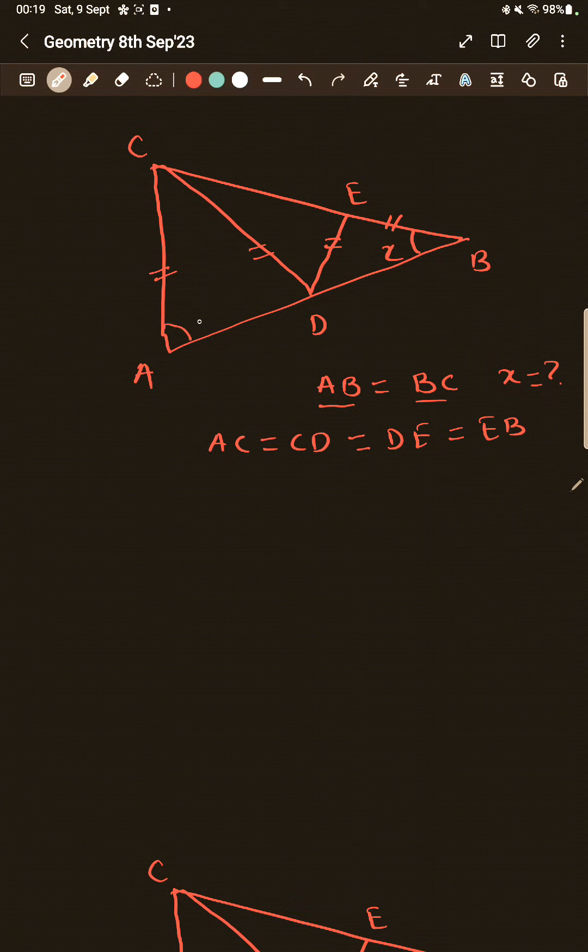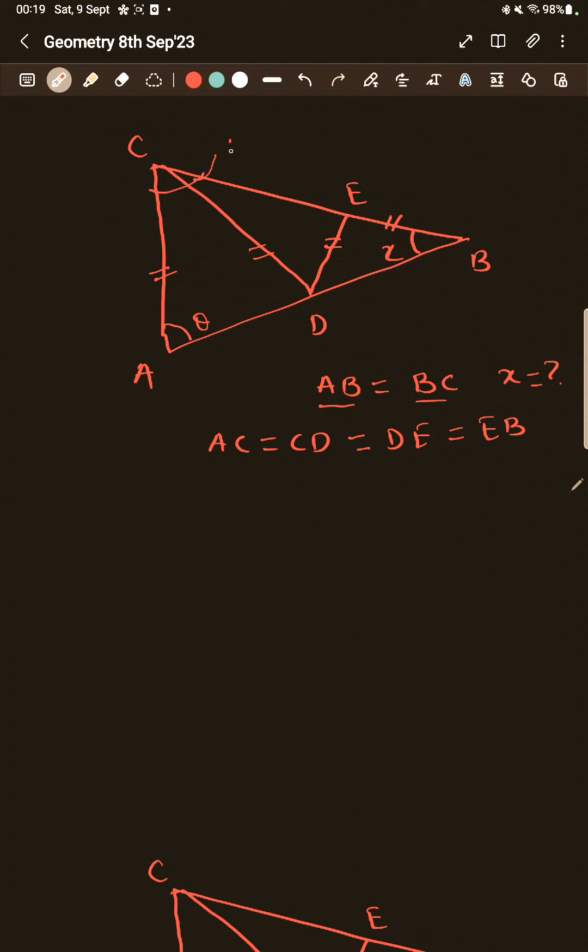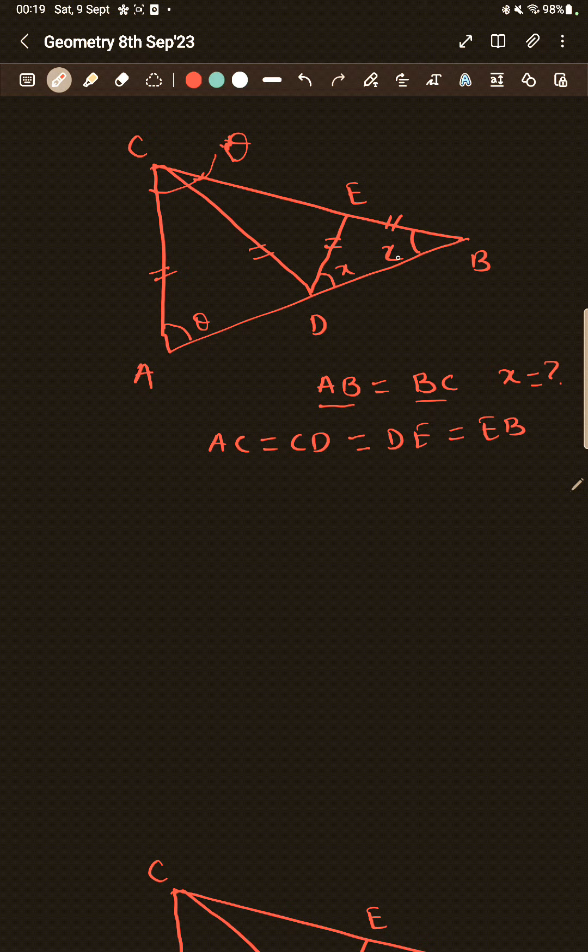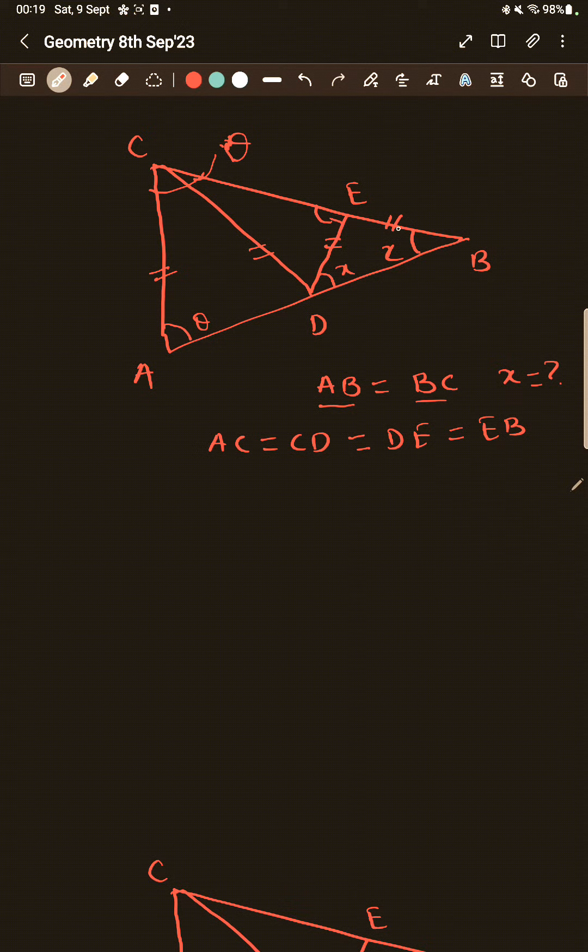So this angle will be theta and this angle will also be theta. Now we have been given that X is here. So this angle will also be X because these two sides are equal. Now these two angles are XX. So this is external angle of this triangle, which is EDB. So it will be 2X. Again,